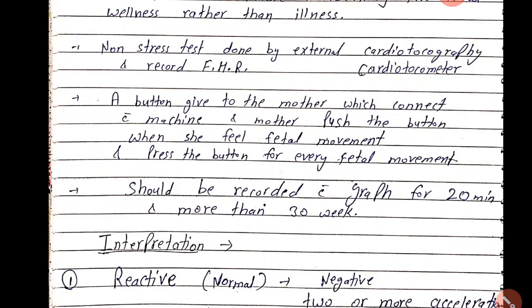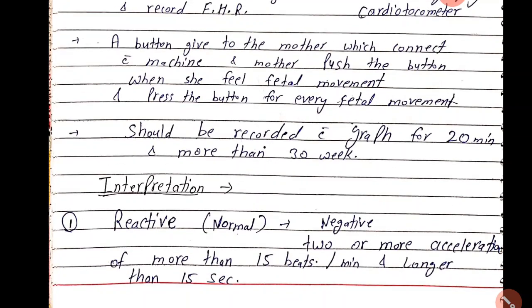When the mother pushes the button, fetal movements are recorded on the CTG machine, and simultaneously the fetal heart rate at that time is also recorded. The graph should be recorded for 20 minutes. This test is performed after 30 weeks of pregnancy.